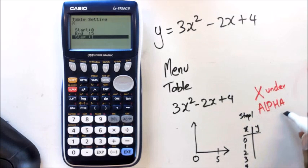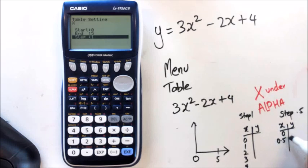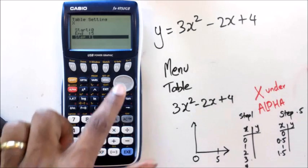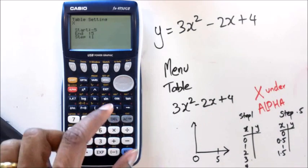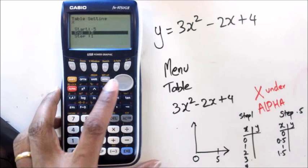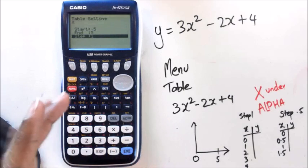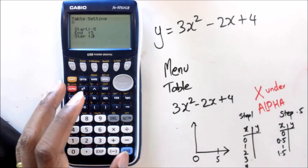If you put a step of, say, 0.5, then what's going to happen is you're going to get 0, 0.5, 1, 1.5. So what I'm going to do is I'm going to go into start, put my start value as minus 5, my end value as positive 5, and of course, step, let's say I'm going to do 2 in this case, just so you get an idea.